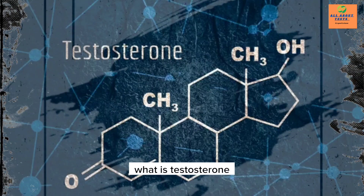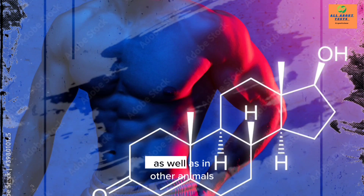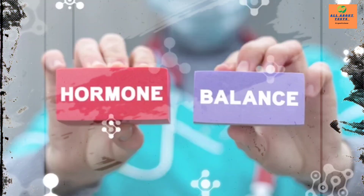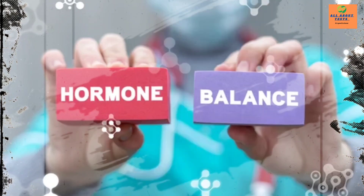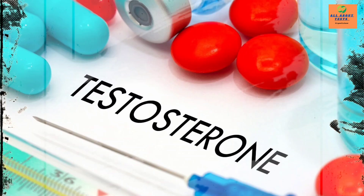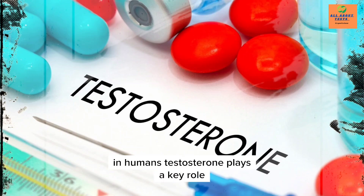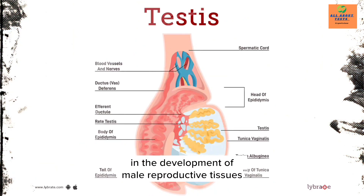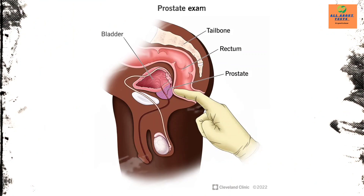What is testosterone? Testosterone is a hormone found in humans as well as in other animals. It's a hormone that your gonads mainly produce. Testosterone is the primary male sex hormone and androgen in males. In humans, testosterone plays a key role in the development of male reproductive tissues such as testes and prostate.